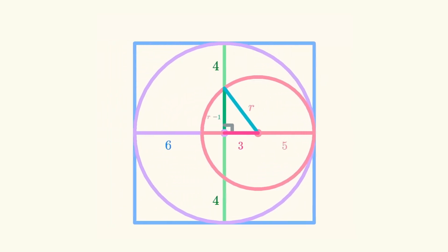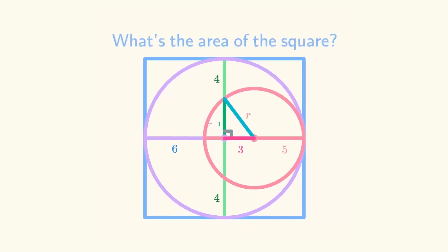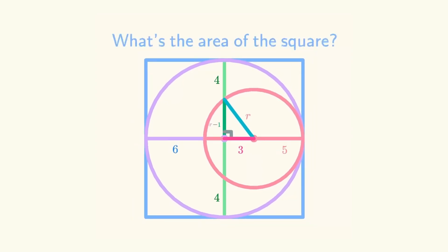We've found the value of the radius of the small circle, but remember we're looking for the area of the square. We're close to getting there, so stay with me.